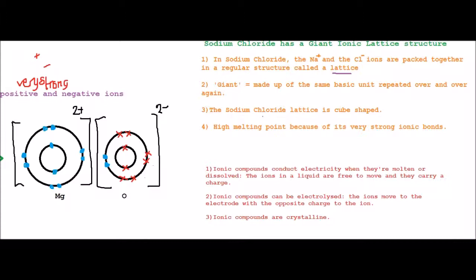The sodium chloride lattice is cube shaped. Not every lattice is cube shaped, but they do still count as giant lattices, but sodium chloride is cube shaped, and it has a high melting point because of its very strong ionic bonds. Plus there is a lot and lot of ionic bonds.